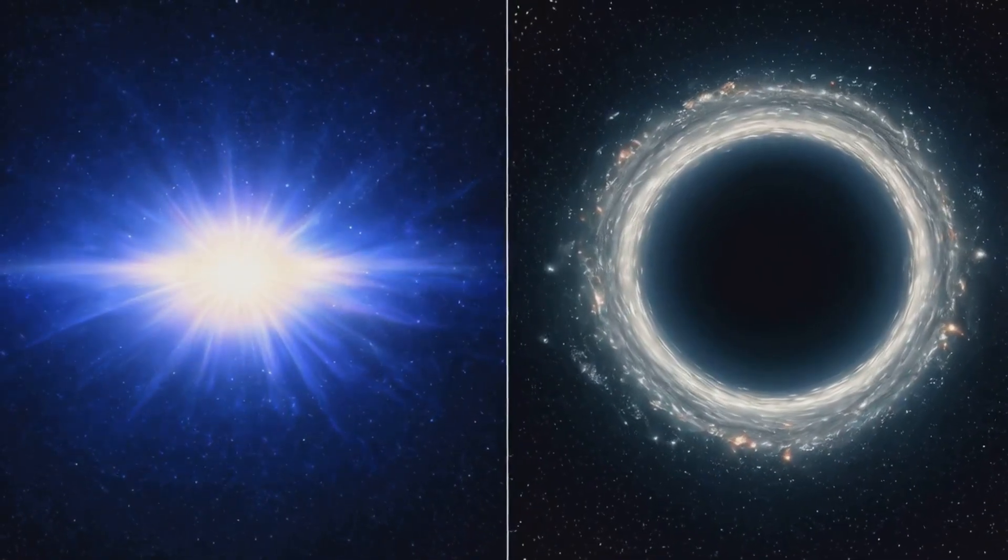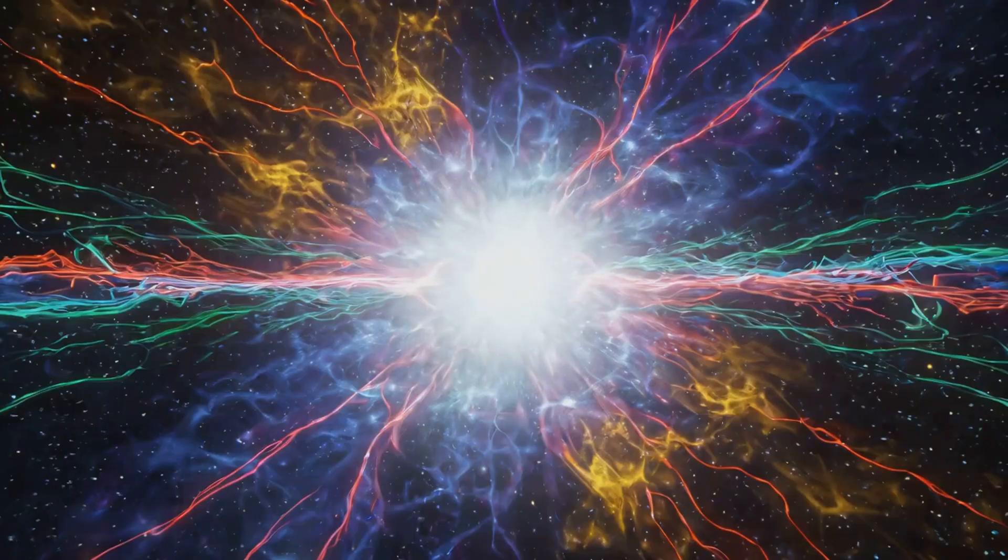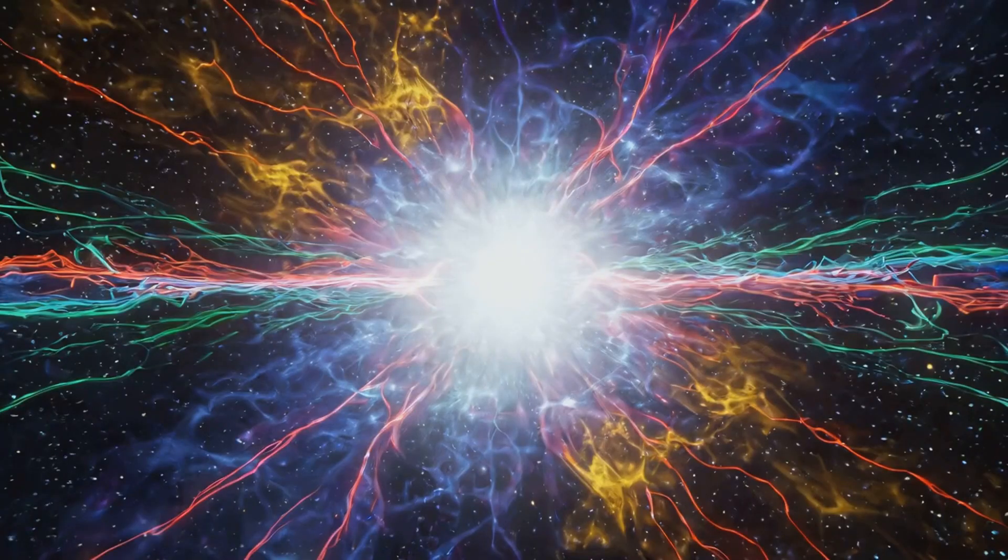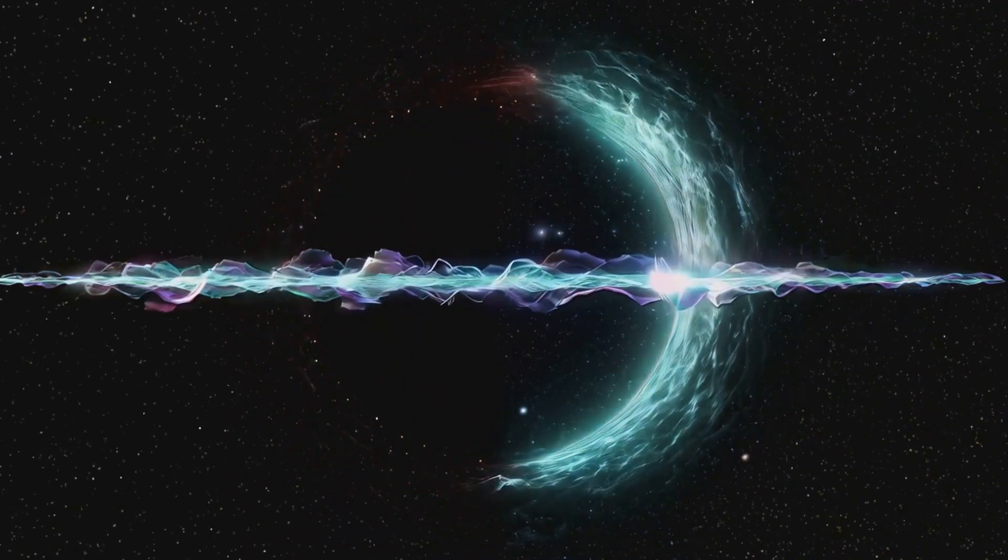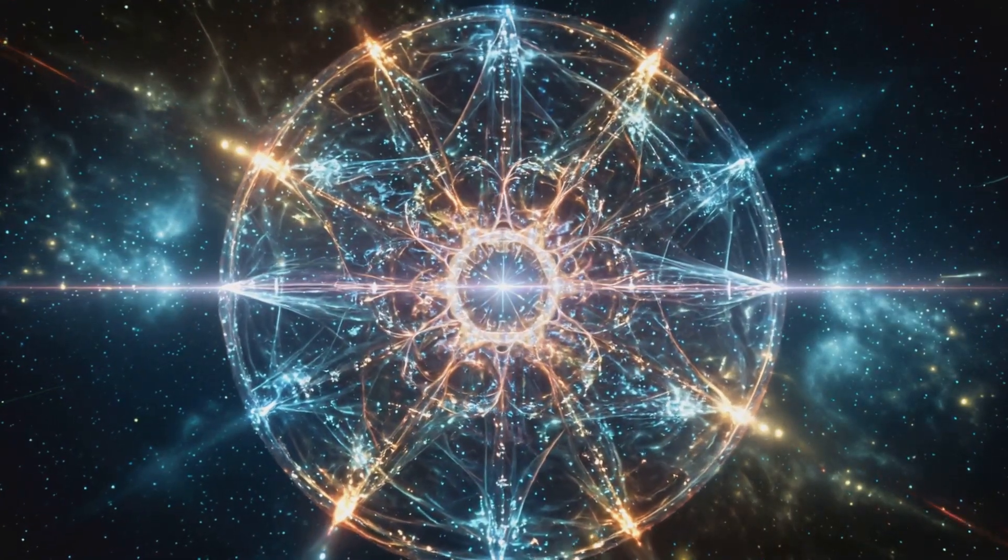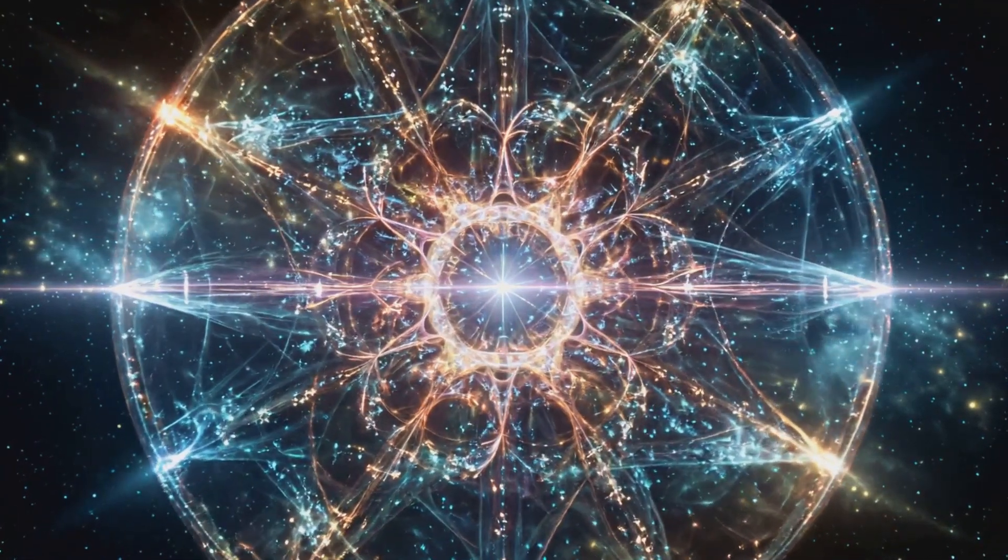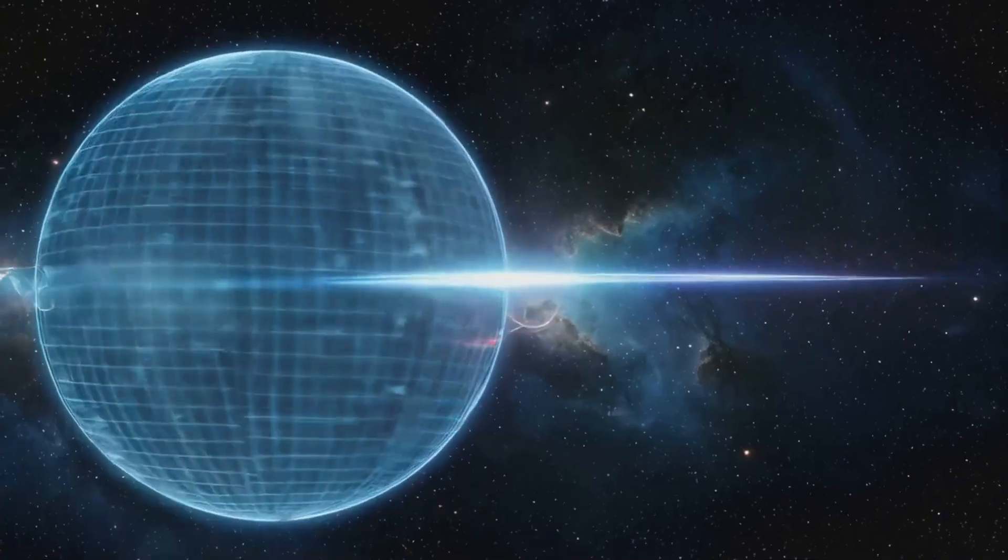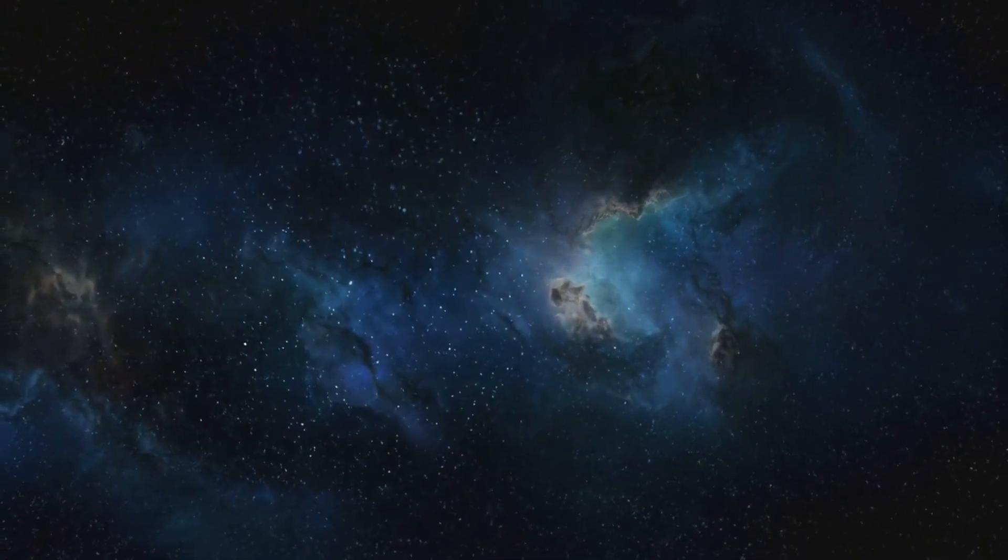From this perspective, the singularity is the source of all quantum information, holding all possible states in timeless superposition. The event horizon is the mirror reflecting and inverting these frequencies, transforming them into the reality we observe. Thus reality is not a linear deterministic sequence, but an interference pattern of reflections—a cosmic recursion where information is continually mirrored, transformed, and reprojected in an endless dance of light and frequency.